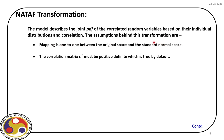In the standard normal space, our main task is to find out the correlation matrix C prime, which is positive definite. In the earlier case we had to find scalar parameter alpha, whereas in this case our task is to find out the elements of this correlation matrix C prime.